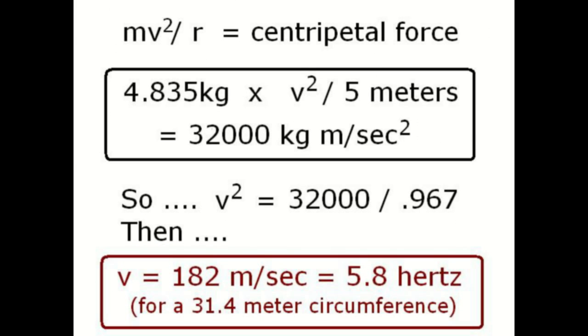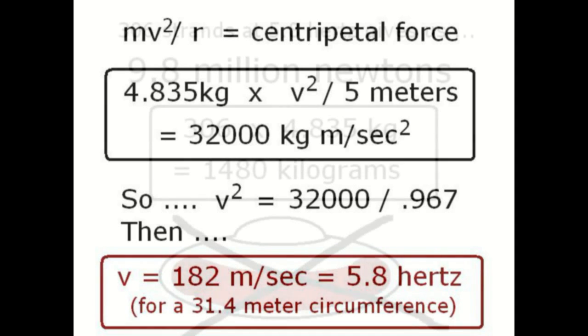This piece of wire will break at 32,000 newtons which is going to be the centripetal force when we spin it. So we plunk these values into our centripetal force equation and come up with a velocity of 182 meters per second which is 5.8 Hertz and that's for a 31.4 meter circle circumference of wire which is going to break at 32,000 newtons.